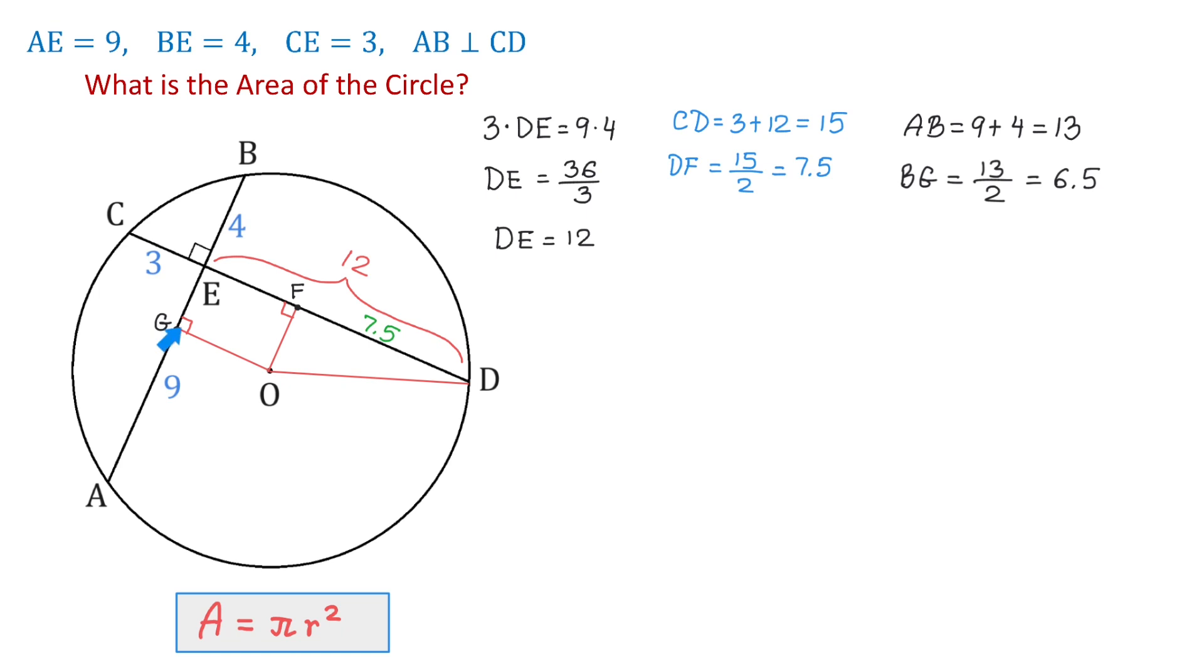Now, to find GE, we will take 6.5 and we will subtract 4. GE equals 6.5 minus 4, which equals 2.5. And because GE is the same as OF, then OF is also 2.5.